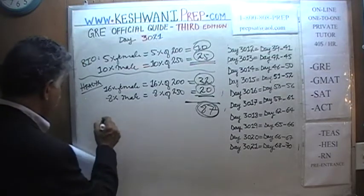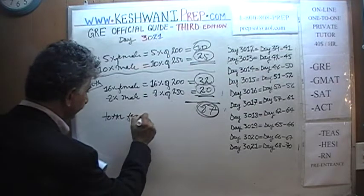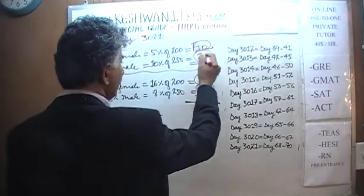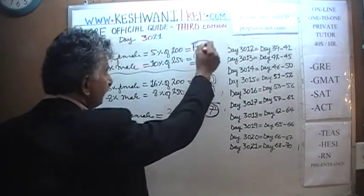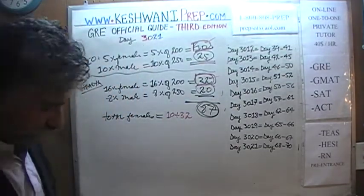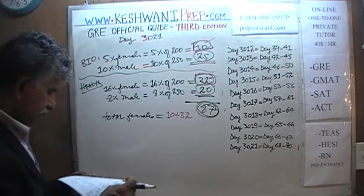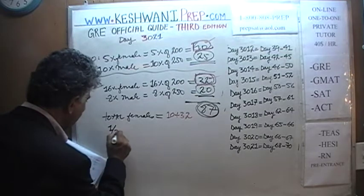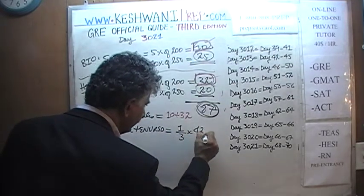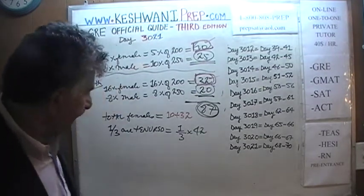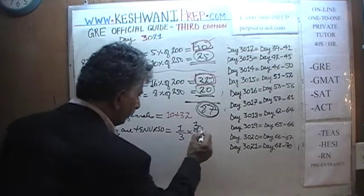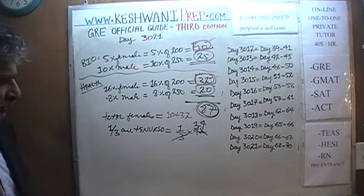Total female faculty across the two departments: 10 (Biology) + 32 (Health Sciences) = 42. We are told one-third of them are tenured. One-third of 42: divide top and bottom by 3 — 42 ÷ 3 = 14. So 14 female faculty are tenured.